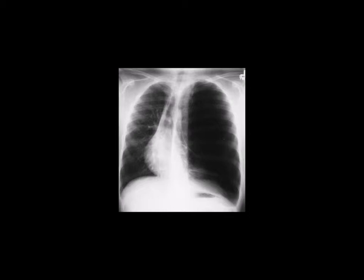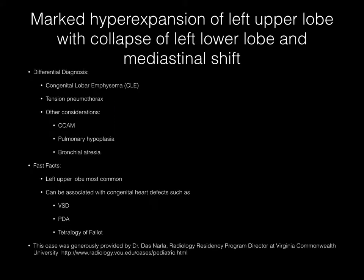Now pause your media player. This frontal radiograph demonstrates marked hyperexpansion of the left upper lobe with collapse of the left lower lobe and mediastinal shift to the right. Your differential diagnosis should include primarily congenital lobar emphysema, or CLE, and tension pneumothorax. Other considerations could also include C-CAM, pulmonary hypoplasia, and bronchial atresia.